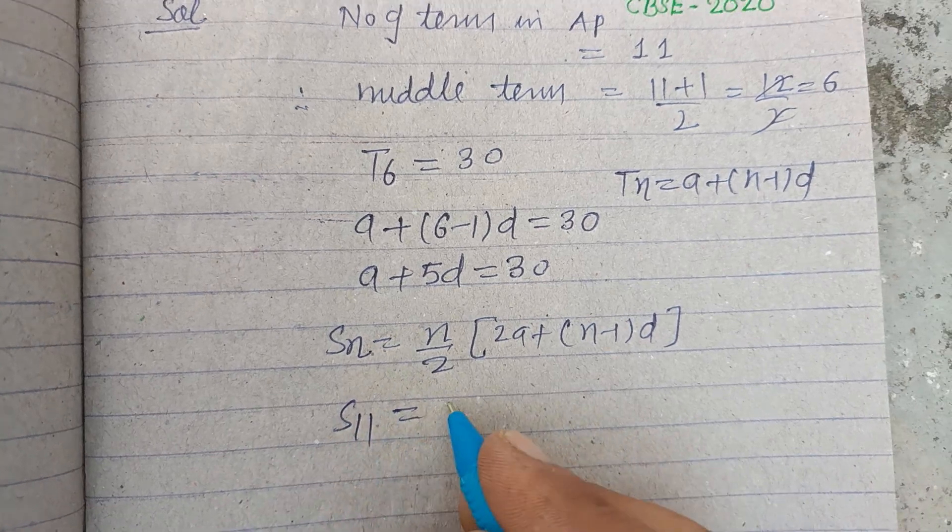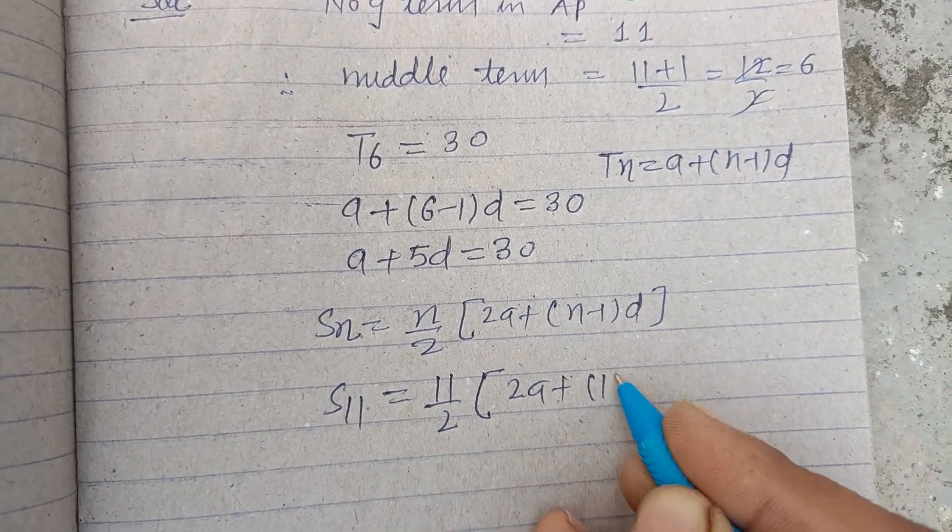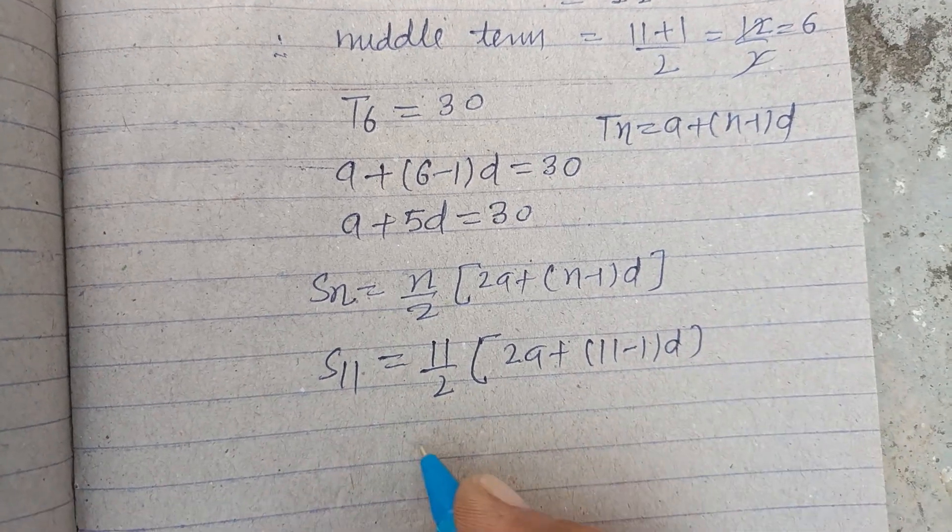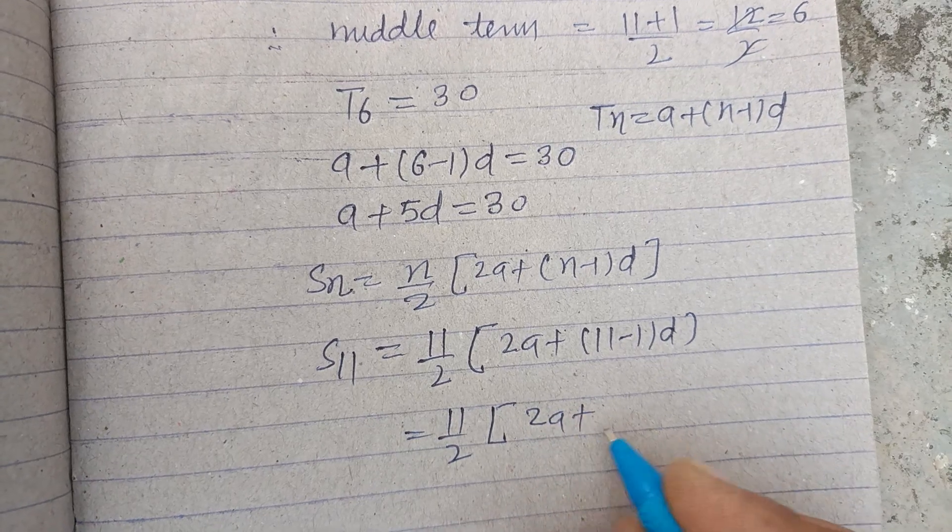S11 = (11/2)[2a + (11 - 1)d], which is (11/2)(2a + 10d).